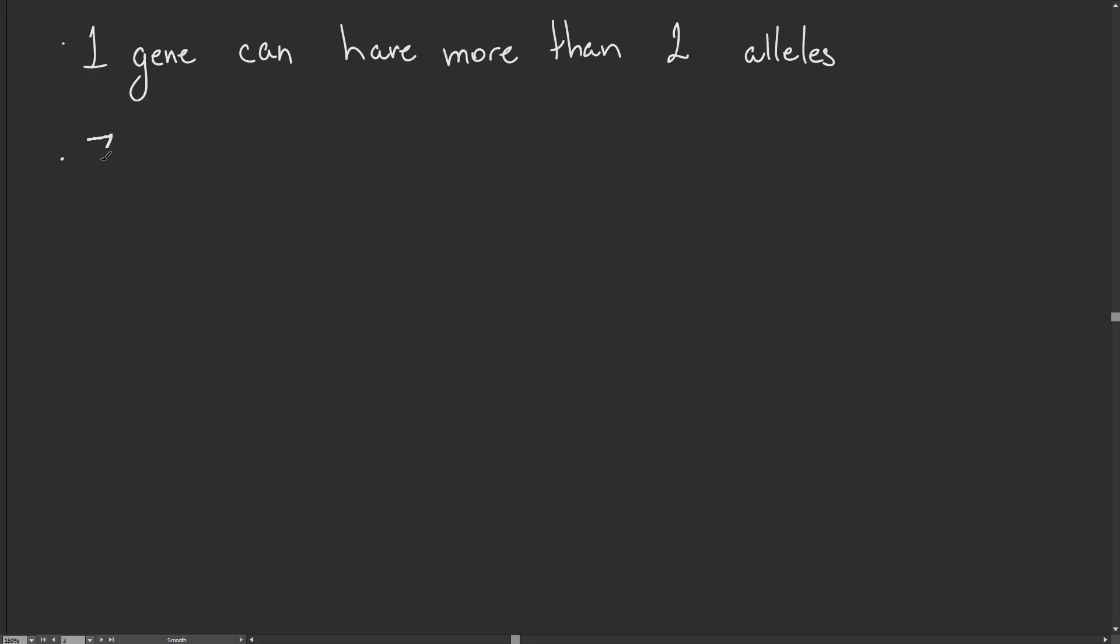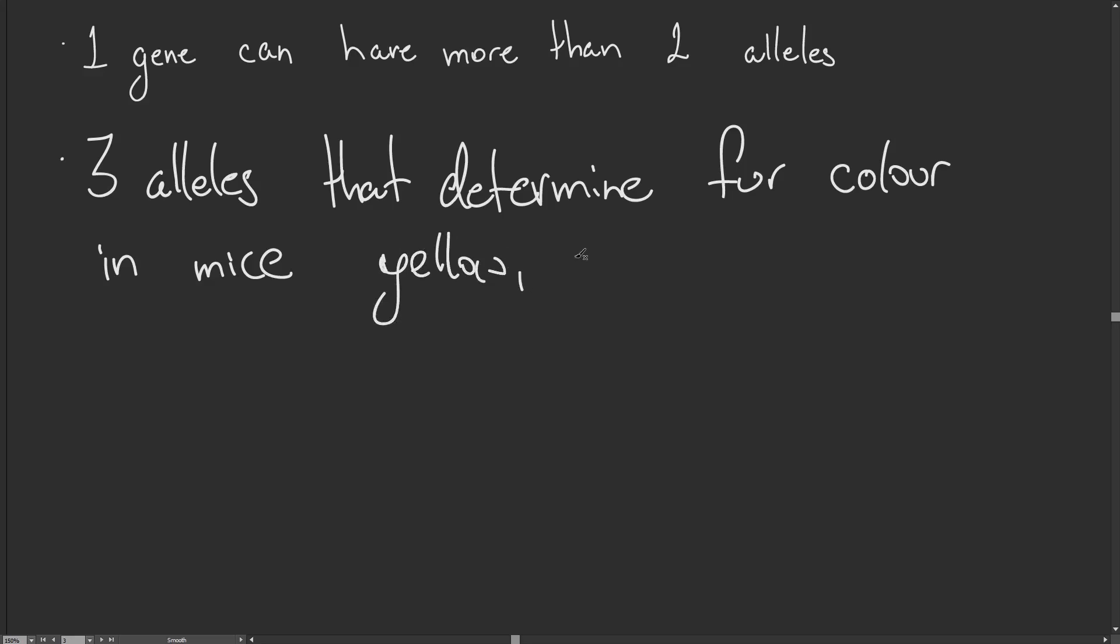The first example is that there are three alleles that determine fur color in mice. The three different colors are yellow, grey, and black. These are three different alleles in mice. The gene in this case is fur color, and the three alleles are yellow, grey, and black.